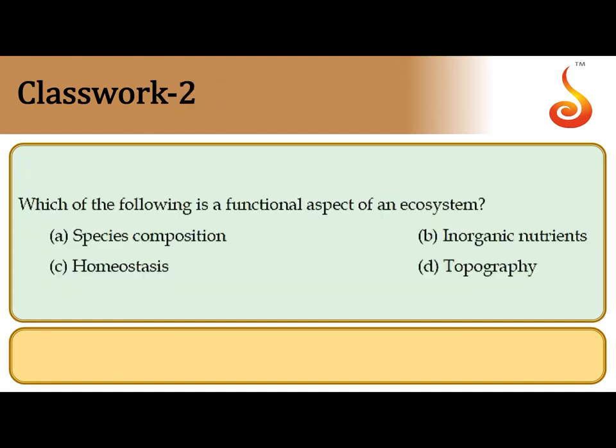The second question asks which of the following is a functional aspect of the ecosystem. Most of the options given are structural aspects; however, maintenance of a constant environment, maintenance of stability and balance in the ecosystem — referred to as homeostasis — is a functional aspect. So the correct answer is option C: homeostasis.